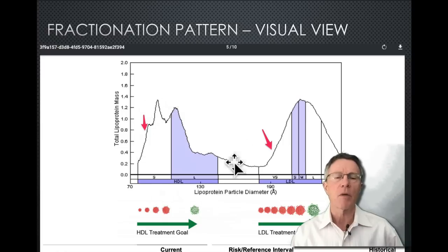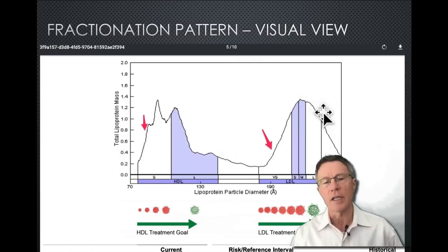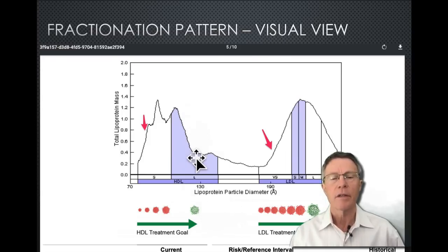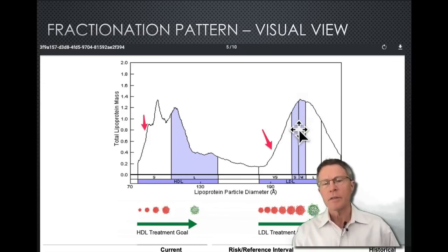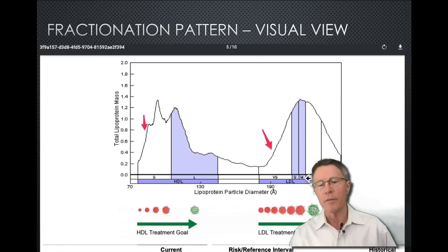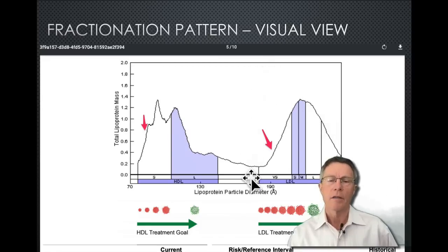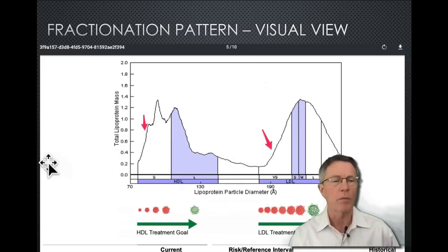The HDL particles — the smallest and densest — appear on the left-hand side, while LDL particles appear on the right. In both populations, as you can see from the green and red indicators, it's healthier to have larger, less dense HDL and also larger, less dense LDL. On this patient, it would be better if the LDL peaked over in the large category, but the vast majority of this patient's LDL particles are still on the larger end, with no significant peak in the small dense region.